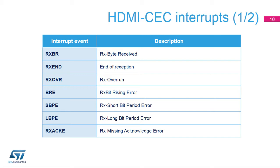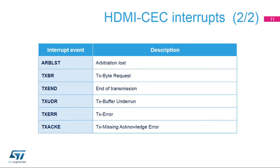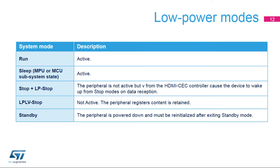Here is an overview of HDMI CEC reception interrupt events. An interrupt can be produced during reception if a receive block transfer is finished, or if a receive error occurs. Here is an overview of HDMI CEC transmission interrupt events. An interrupt can be produced during transmission if a transmission block transfer is finished, or if a transmit error occurs.